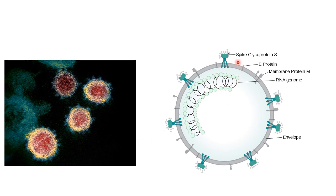This picture shows the important structures in SARS-CoV-2. The important structures include spike glycoprotein S, E-protein, membrane protein, RNA genome, and envelope.